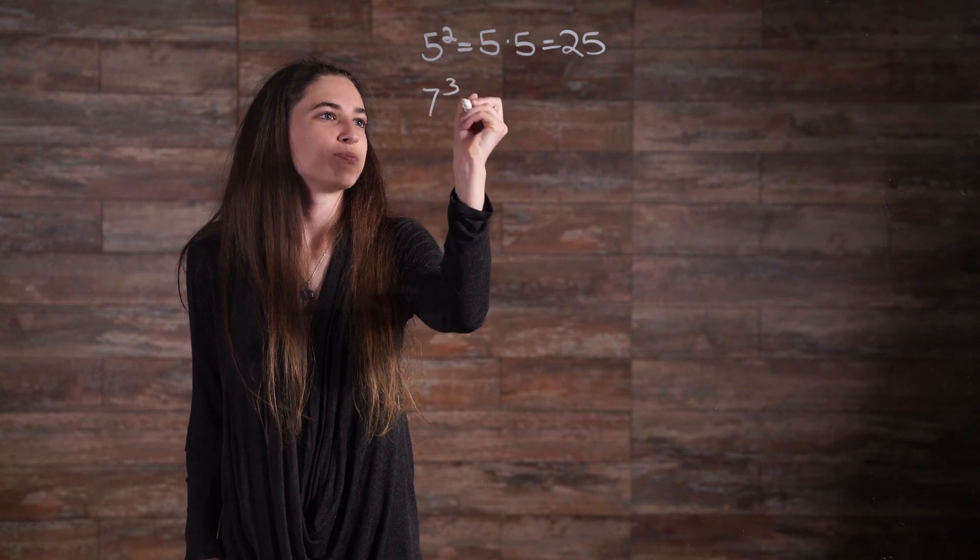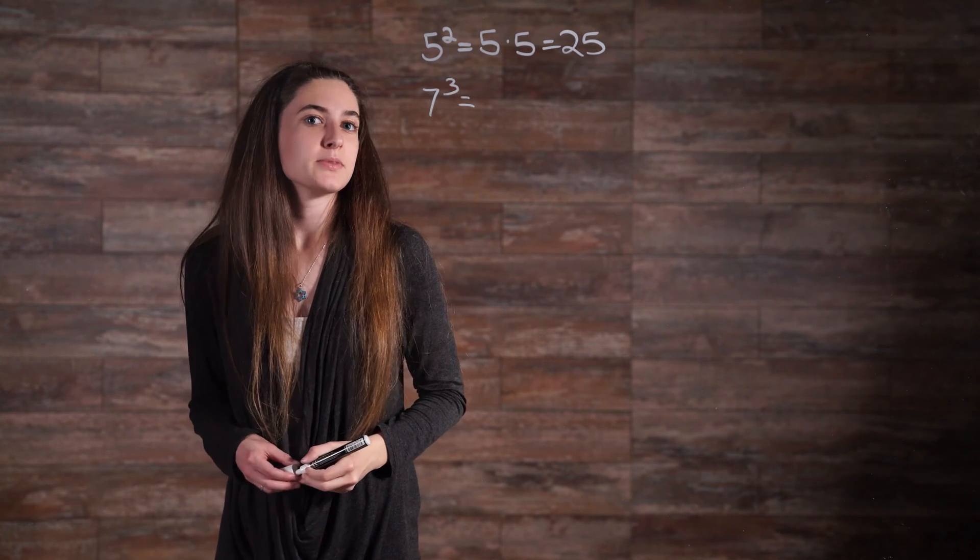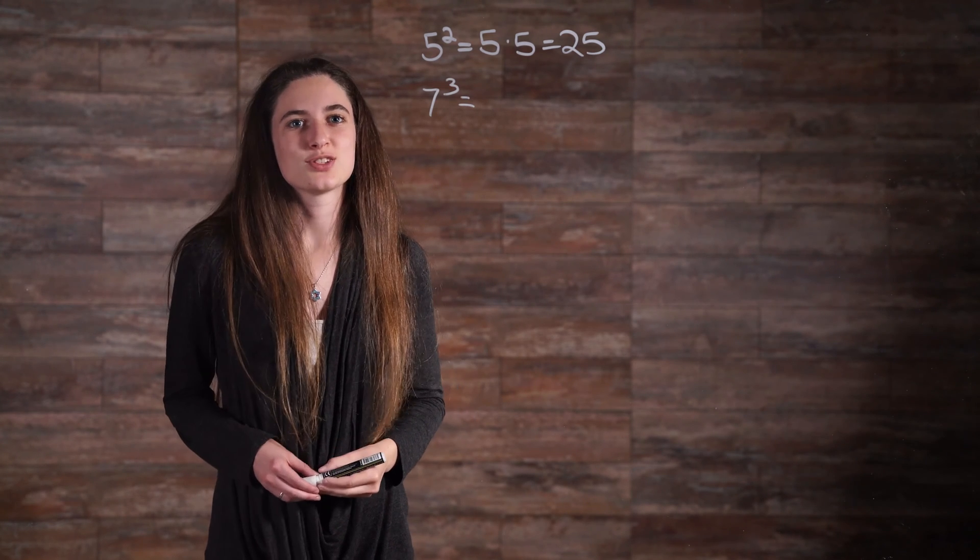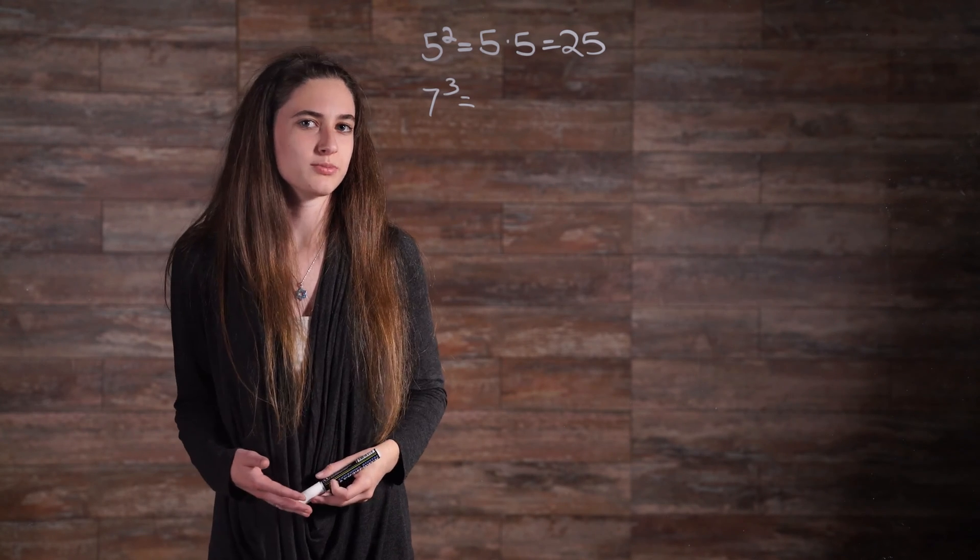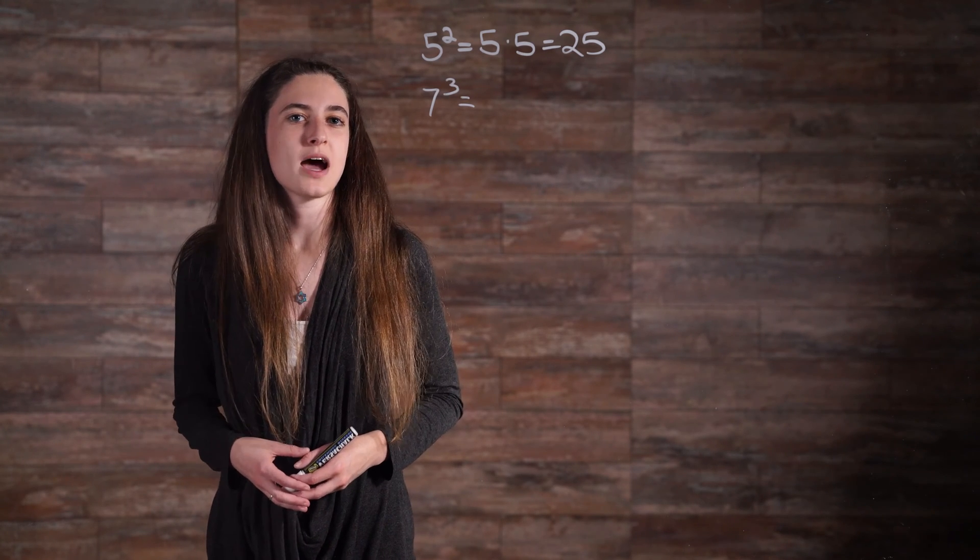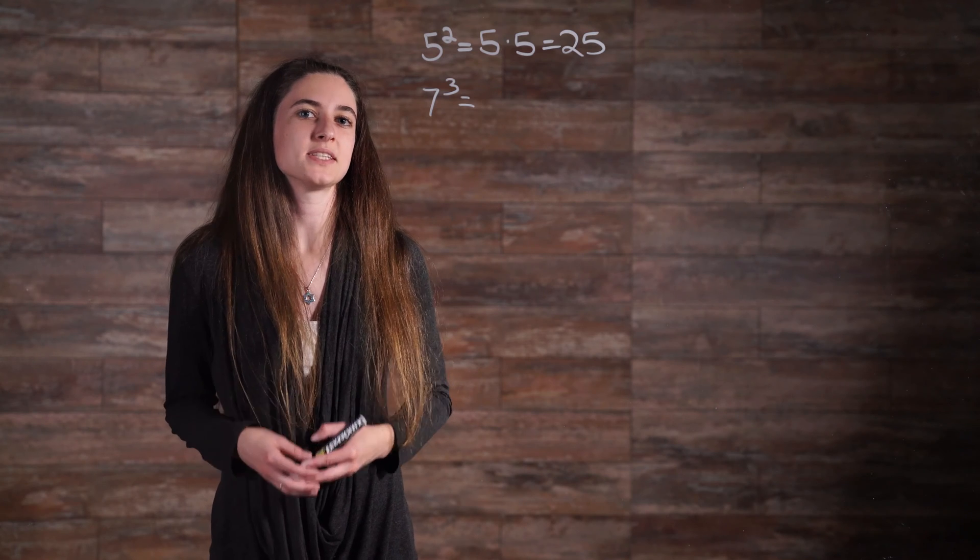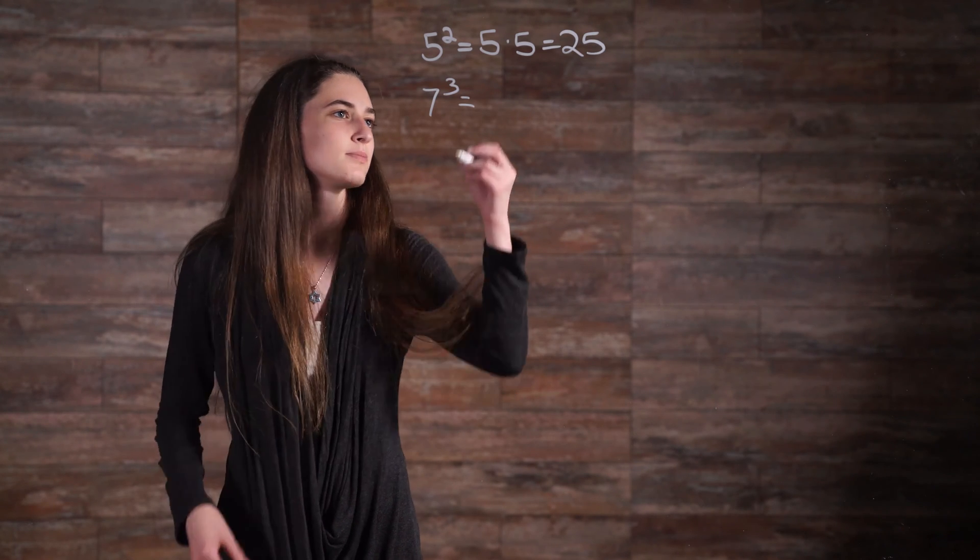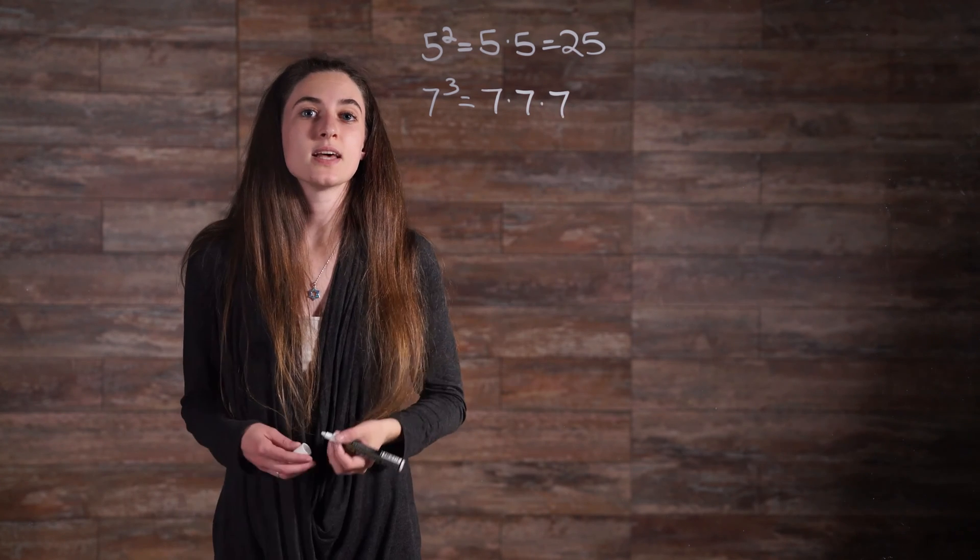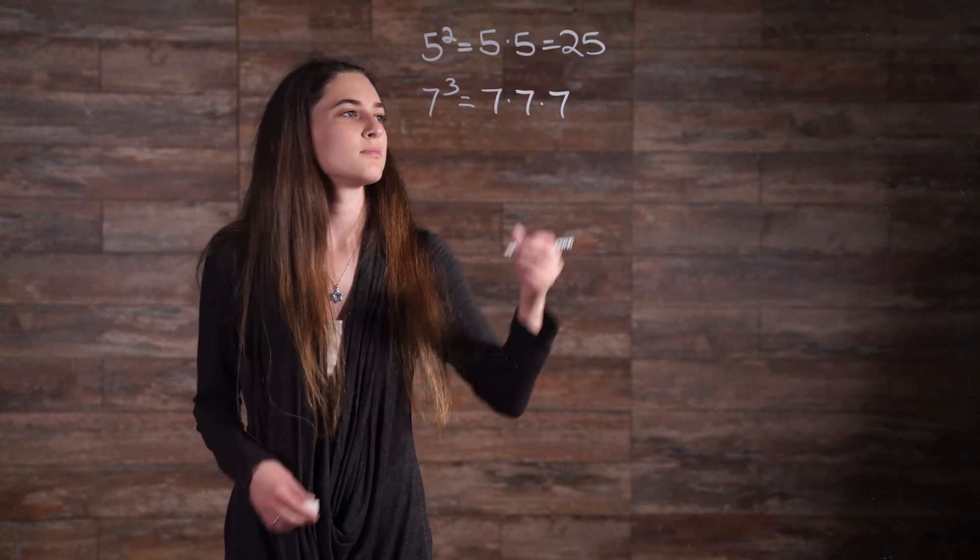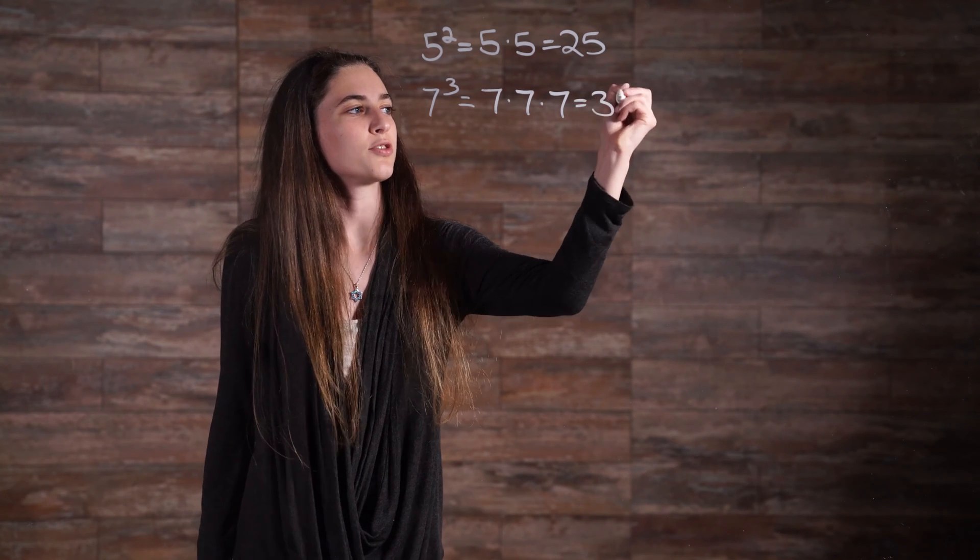7 cubed. This time the base is 7 and the exponent is 3. This can be read as 7 to the third or 7 cubed. Raising a base of 7 to the power of 3 means to multiply 7 by itself 3 times. 7 times itself 3 times equals 343.